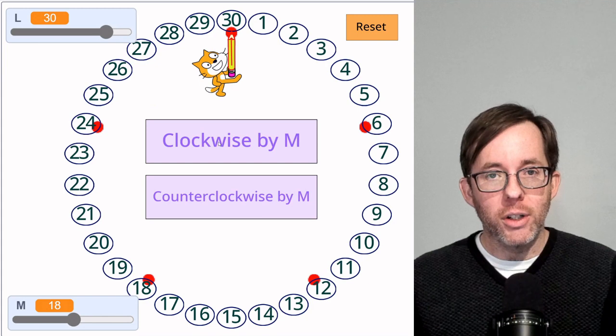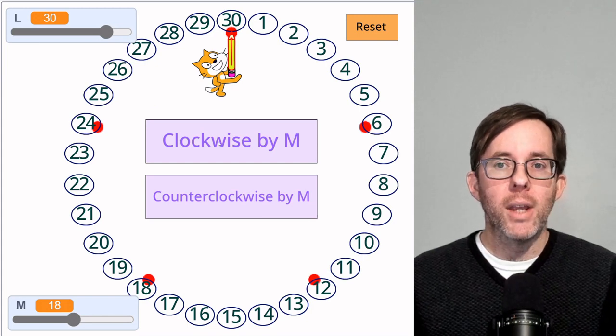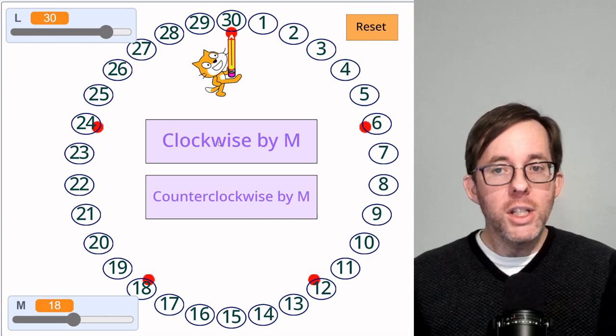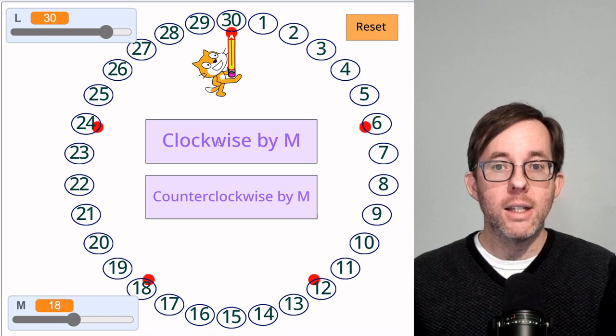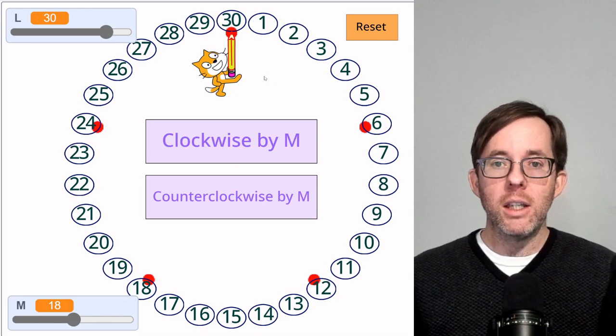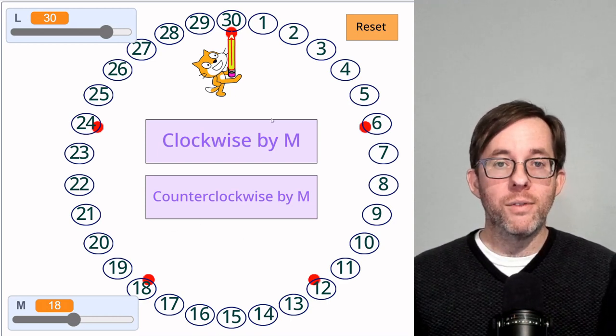So in this case, l is 30 and m is 18, and the greatest common divisor of 30 and 18 is 6. And as you can see, we're hitting all the multiples of 6.